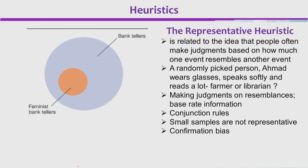Doosra heuristic hai representative heuristic, jo related to the idea that people often make judgments based on how much one event resembles another event. Ab ek randomly picked person hai, uska naam Ahmad hai, wo anak lagata hai, naram lehje mein bolta hai, aur parhta bahut hai. Aapka kya khayal hai — wo kisaan hoga ya librarian hoga?